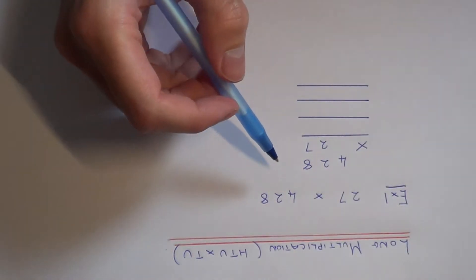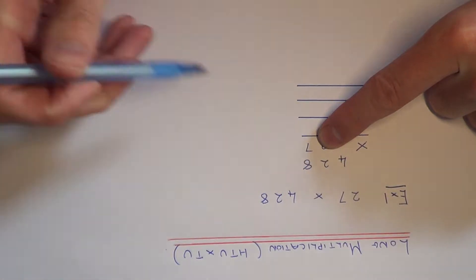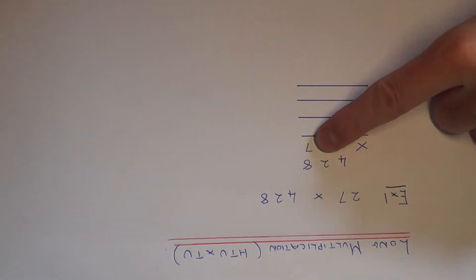So on our top line we can ignore the 2 and we just need to work out 428 times 7 in a similar way to how you carry out your short multiplication.